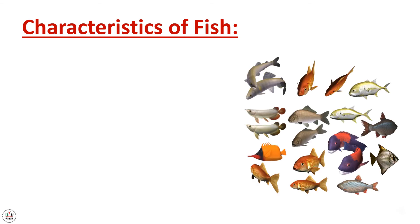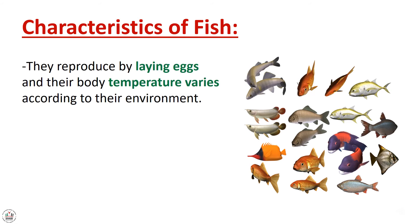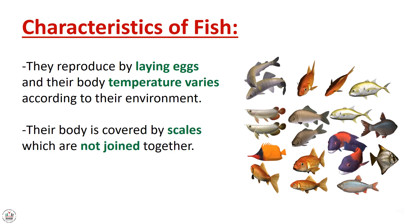Fish reproduce by laying eggs and their body temperature varies according to their environment. Their body is covered by scales which are not joined together. They are cold-blooded animals.